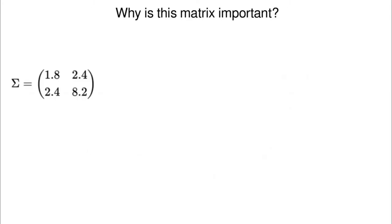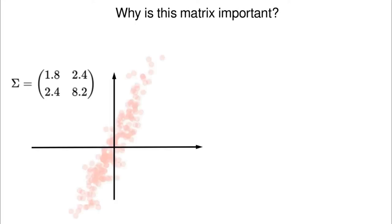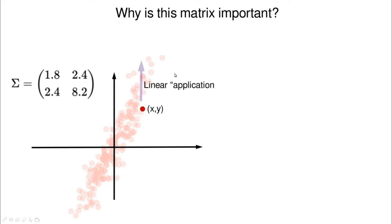But why is this matrix so important? A matrix is a linear transformation. Let's take our data and center it — the center of the axis is now the center of the graph, having subtracted the mean value of X and the mean value of Y. Let's forget about the meaning of the covariance matrix and imagine it as a kind of black box which transforms points into another point — a linear transformation.